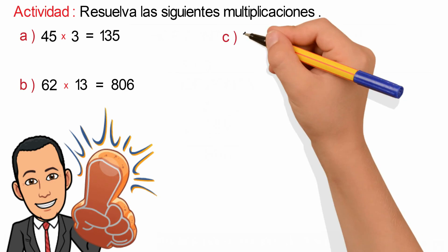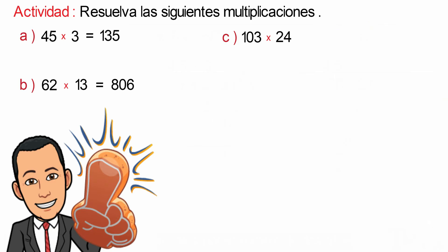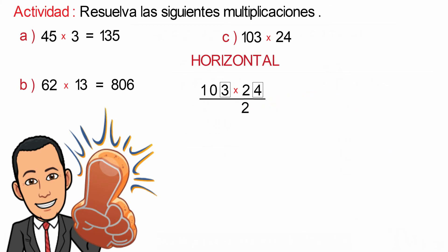As the last problem, we have 103 multiplied by 24. We start with the horizontal option, writing the operation horizontally and solving. We start by multiplying the number 4 by the number 3, which corresponds to the unit, giving us 12; we write the 2 and carry 1, placing it above the 0. We repeat the process, multiplying 4 by 0, which corresponds to the tens, giving us 0 plus 1 carried, equal to 1.